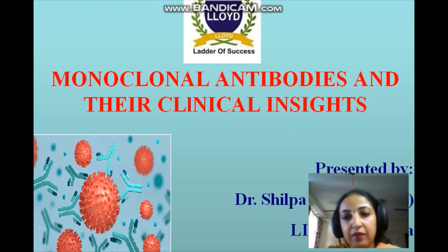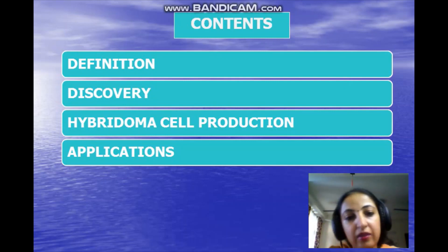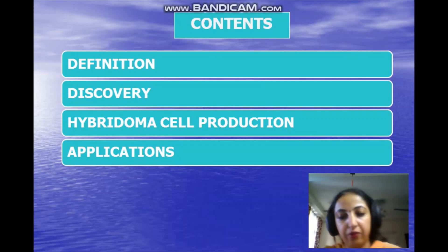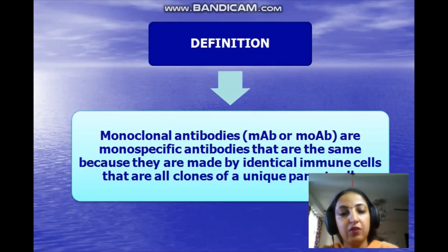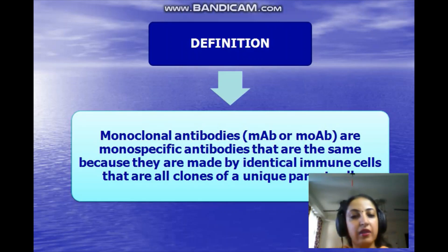Starting with the next slide, I will be covering the definition, the discovery, the hybridoma cell production, and the application part. Starting with the definition: monoclonal antibodies are monospecific antibodies that are the same because they are made by identical immune cells.